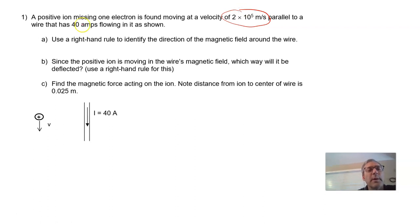That velocity parallel to a wire that has 40 amps flowing in as shown. Use the right hand rule to identify the direction of the magnetic field around the wire. If we look at the wire here, whenever there's current moving through a wire, there's a magnetic field around it.